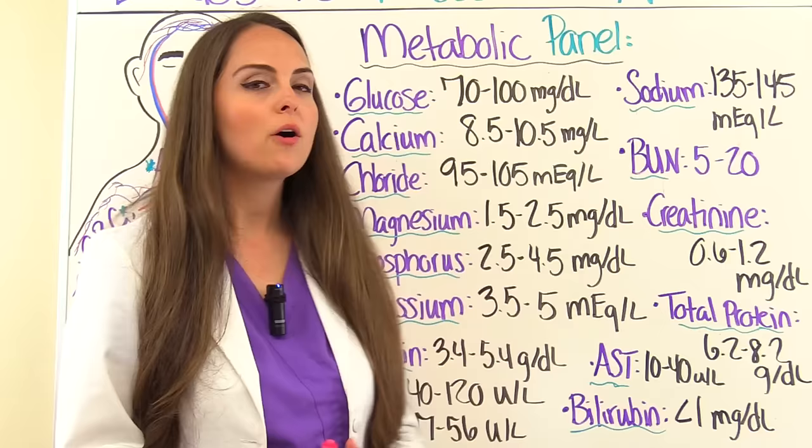Now let's switch to the hemoglobin A1c test, which helps us determine the average glucose in a person over the last three months — great for patients who have diabetes. In a person without diabetes, we want a hemoglobin A1c of 4 to 6%. But if they have diabetes, the target hemoglobin A1c should be less than 7%.